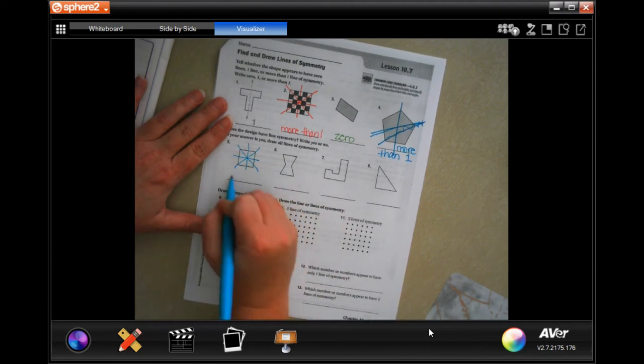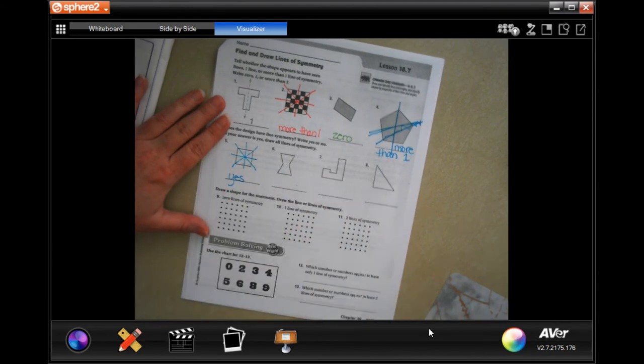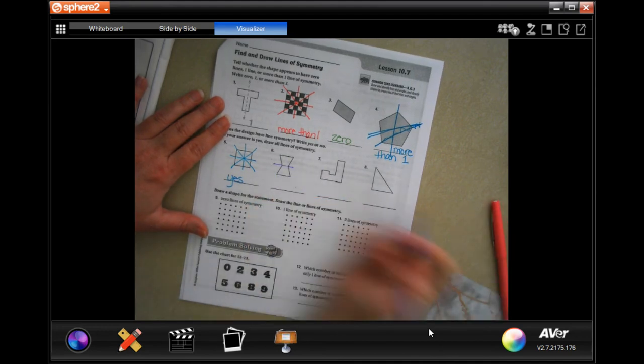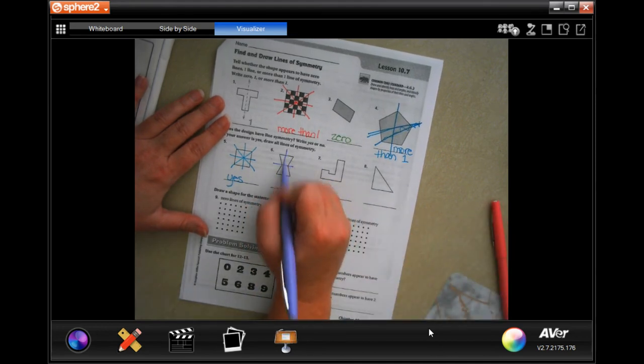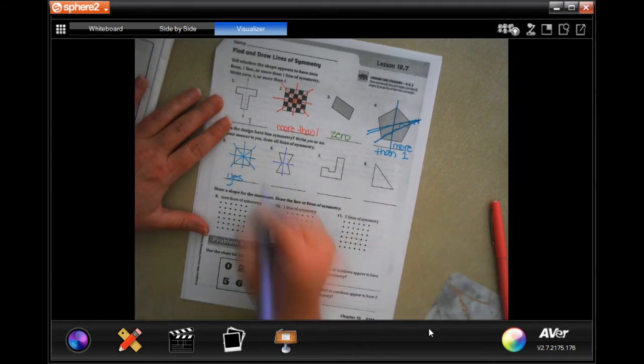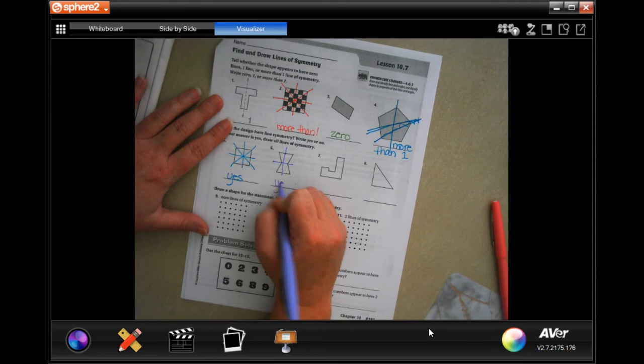All right, on the next one, if we were to split it like this we would have a line of symmetry. If we were to split it like that we would have a line of symmetry. If it was a straight line, obviously I'm not an artist, so yes, we're good.